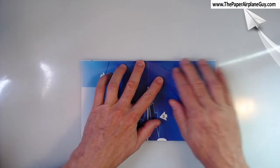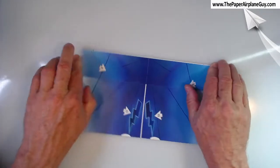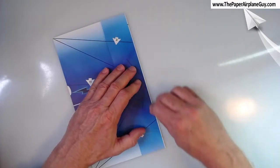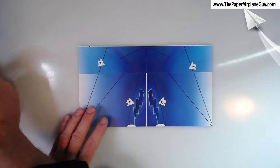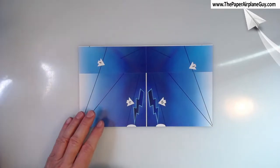There we go, pretty close. I'm using my thumbnail to make a nice sharp crease. You could use anything like a pen, an old credit card, anything like that works pretty well.